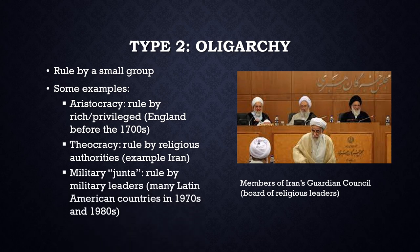Another type of oligarchy is the military government, often referred to by the Spanish term junta. Many countries in Latin America were ruled by military juntas in the 1970s and 80s, and military governments have been fairly common all over the world.